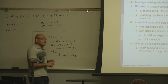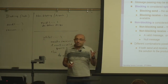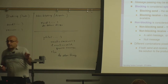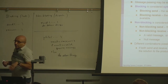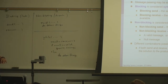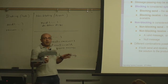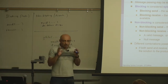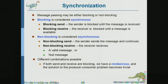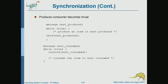We can have any combination of blocking and non-blocking — four combinations: blocking send with blocking receive, blocking send with non-blocking receive, non-blocking send with blocking receive, and non-blocking send with non-blocking receive. When both are blocking, we have what is called a rendezvous, where both processes proceed in lock step. With blocking send and blocking receive, we can have a typical solution to the bounded buffer problem.